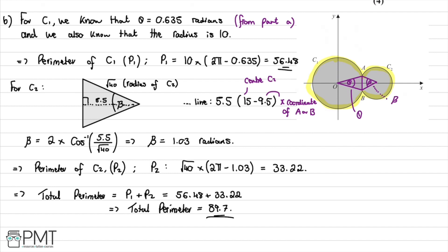This part was worth four marks. The first mark was for the perimeter of C1 at 56.48. The second mark was for calculating angle beta as 1.03 radians. The third mark was for computing P2 as 33.22, and the final mark for concluding with the correct total perimeter of 89.7 to one decimal place.